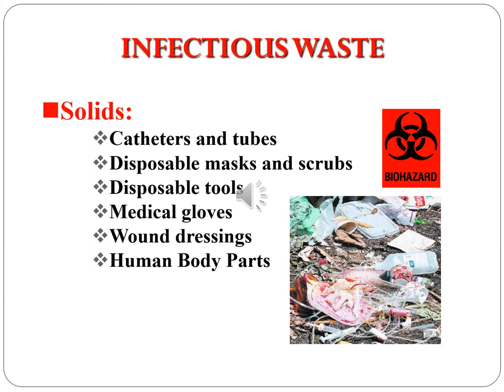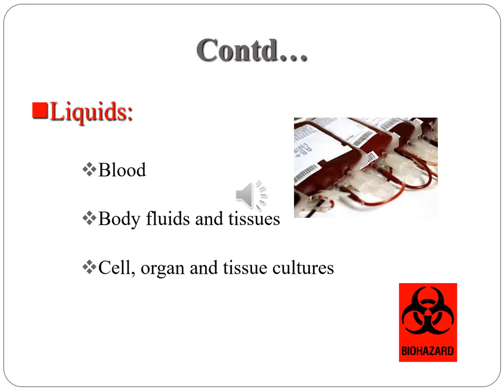Next type is infectious waste. In infectious waste, it is divided into three subtypes: solid, liquids, as well as sharps. Some of the solid waste are catheters and tubes, disposable masks, disposable tools, medical gloves, wound dressings, as well as human body parts. In liquid waste there are blood, body fluids and tissues, cell organs and tissue cultures.